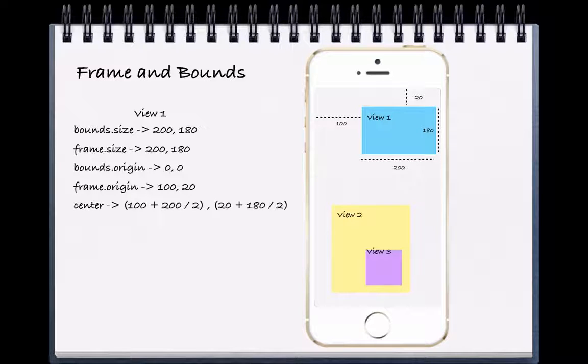Unlike in math class back in the day, when developing for iOS, we do our accounting a little differently. Our origin, or the point zero, zero, is actually at the top left hand of the screen.